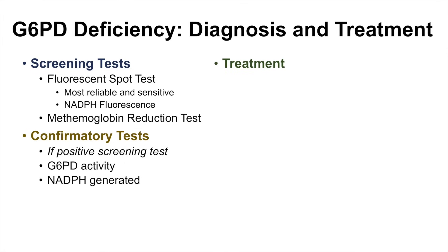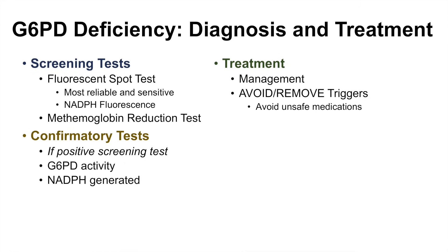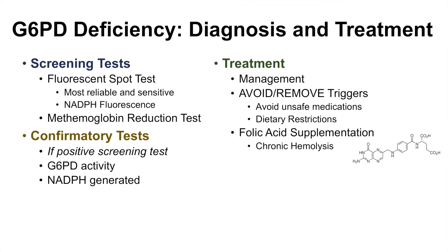When a patient is diagnosed with glucose-6-phosphate dehydrogenase deficiency, treatment involves management by avoiding and removing triggers, including unsafe medications like dapsone and nitrofurantoin, and dietary restrictions such as avoiding fava beans and other legumes. Folic acid supplementation — typically about 1 milligram per day — is helpful, especially in patients with chronic hemolysis. In severe cases with chronic hemolysis, blood transfusions may also be indicated.